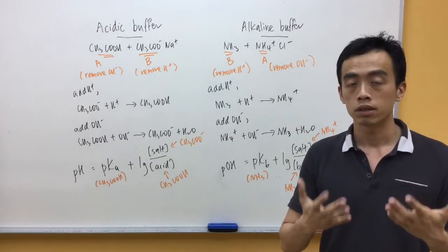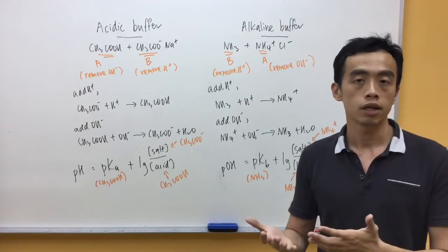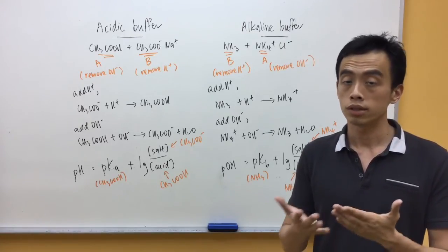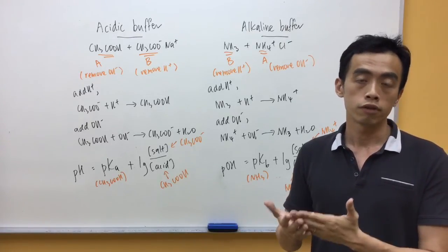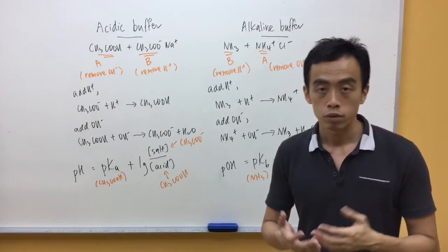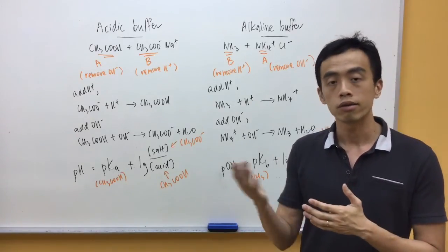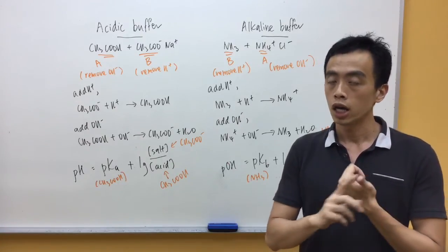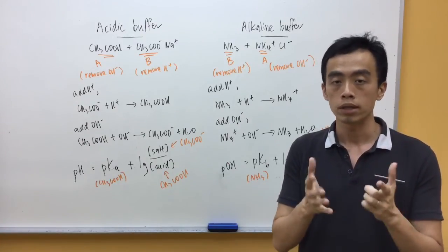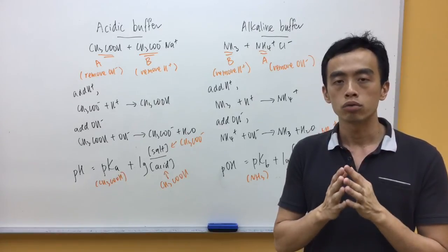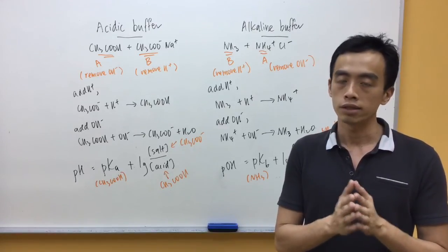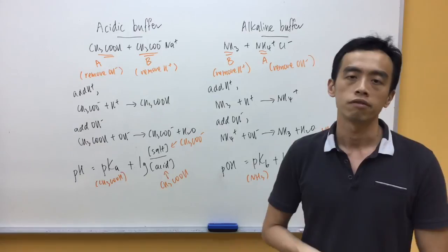So hopefully after this particular discussion, we have a better understanding of our buffer, which is essentially a mixture of a conjugate acid base pair. Now we've also gone through how to write out equations to show how our acid and alkaline buffer can remove H+ and OH-. So therefore maintain pH. We've also went through how to calculate the pH of the acid buffer as well as an alkaline buffer.